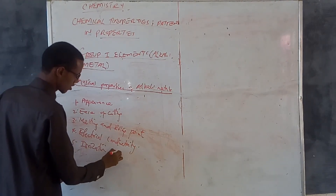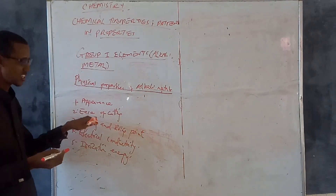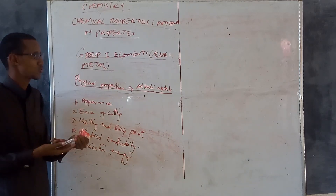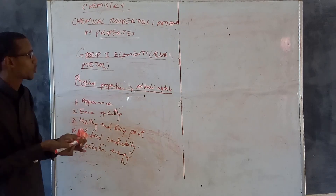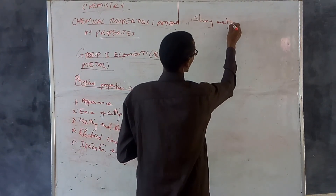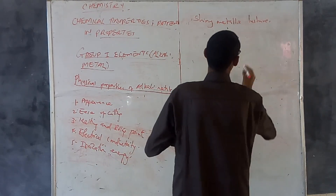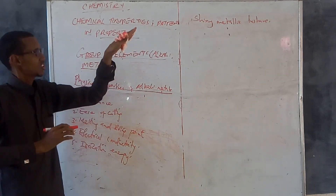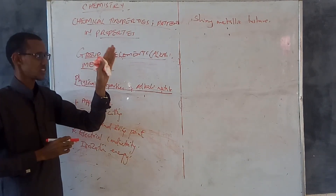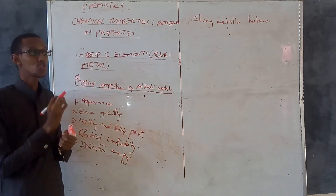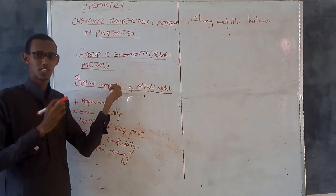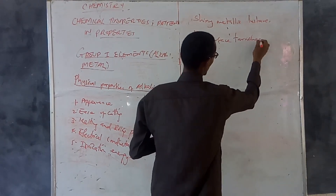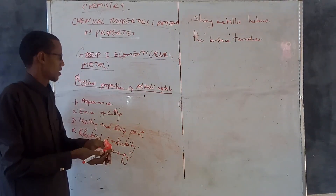Now for the physical properties of group one elements, we will discuss: appearance, ease of cutting, melting and boiling points, electrical conductivity, and ionization energy. For appearance, the alkali metals have a shining metallic luster. However, when they are exposed to air, the surface tarnishes quickly because they react with air.